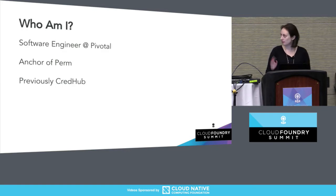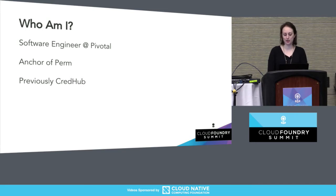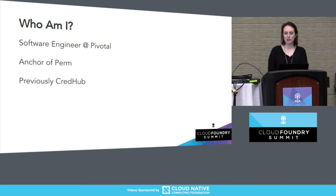Quick intro to myself: I'm a software engineer at Pivotal. I'm the anchor of the PERM team. Prior to that, I was on the CredHub team, working with credentials — kind of a similar space, still in the security space. I really like security.